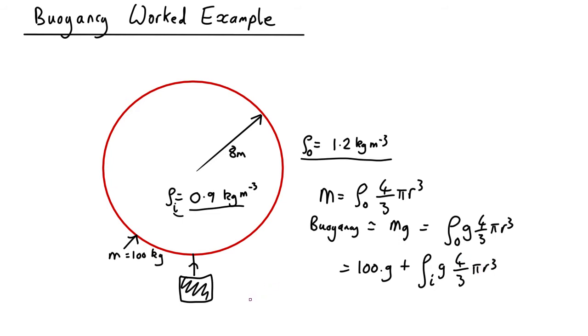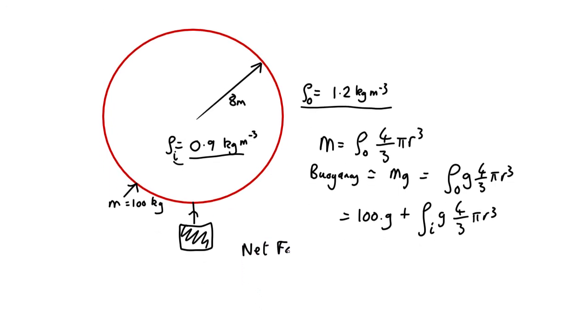So the net force is going to be the difference between these two. Net force equals, with the 4/3 π r³ g can go outside, and then we're going to get ρ₀ minus ρ inside minus 100g.